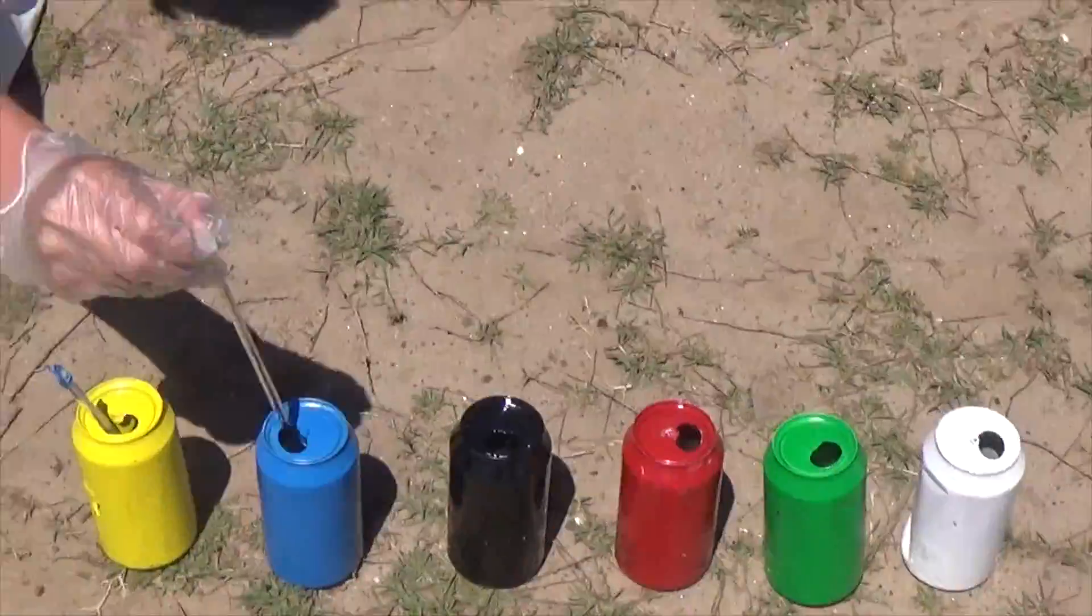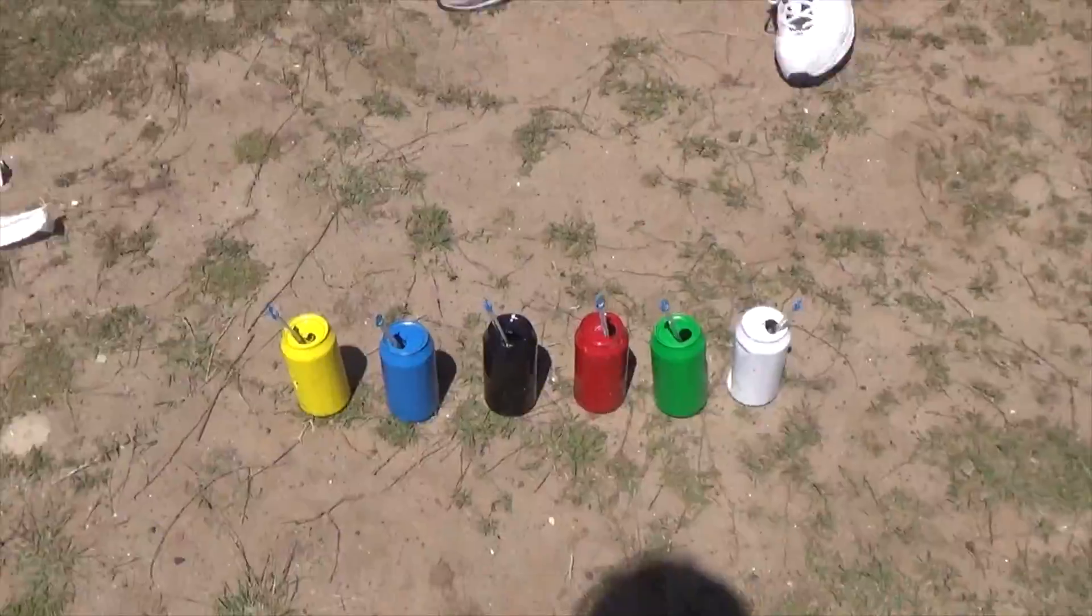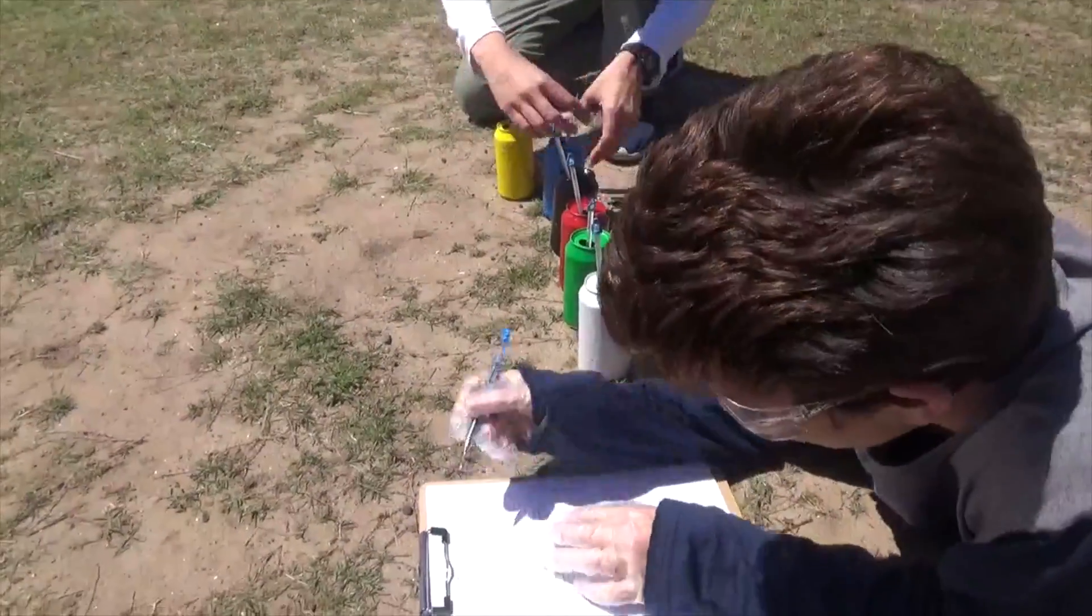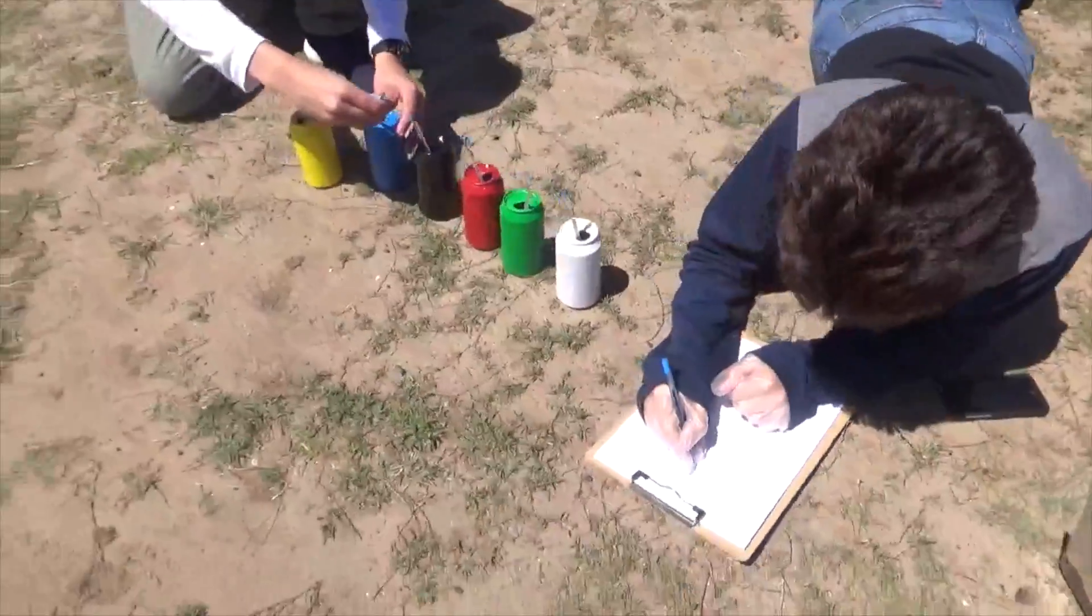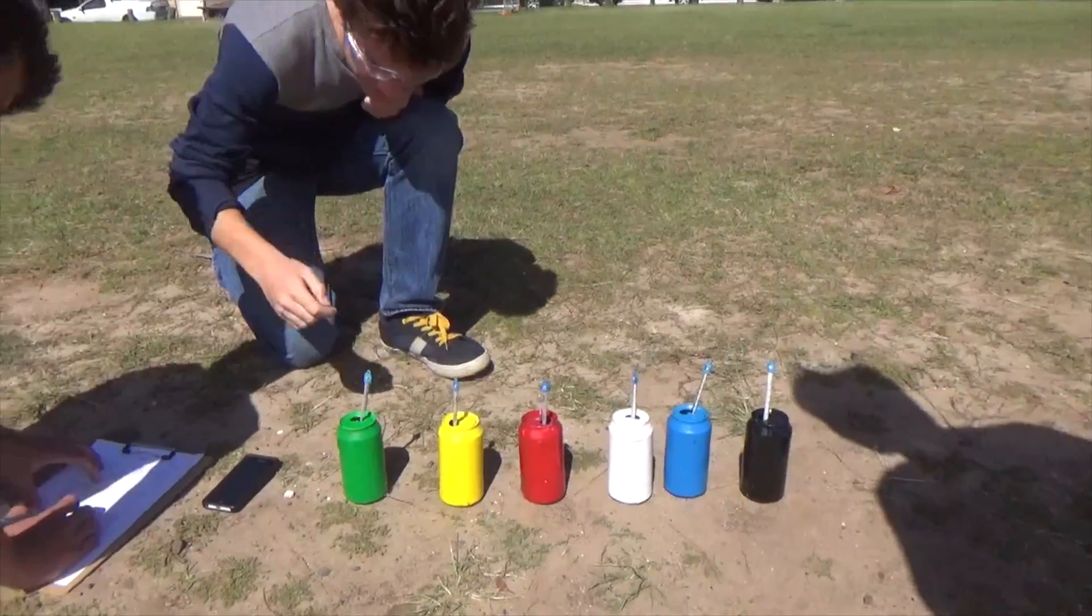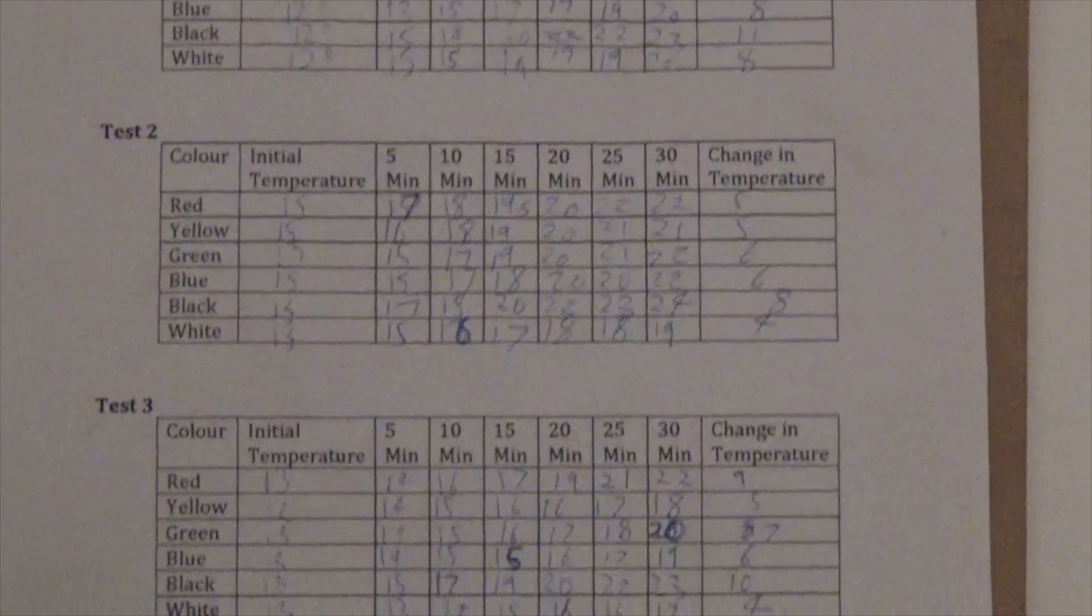On a sunny day, we will take the cans outside and expose them to the sun. We will then insert a single thermometer into each can and measure the initial temperatures of the water. Every five minutes, we will continue to record the temperatures of each can's water until half an hour has passed by, leaving us with six recordings for each can. The experiment will be repeated two more times for accurate results.